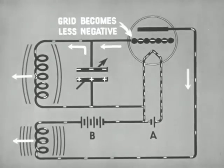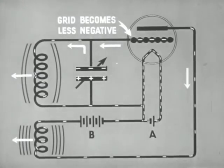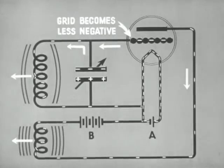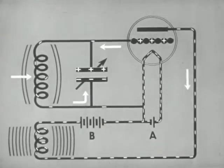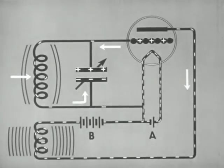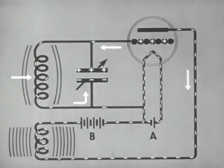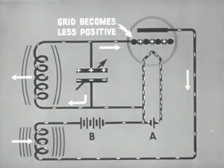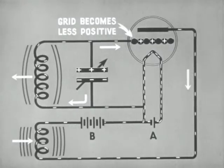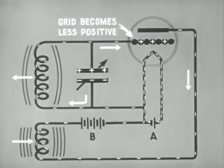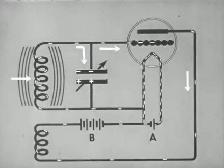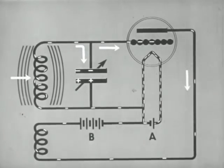As the plate coil field builds up, electrons flow away from the grid. Thus, the grid becomes less negative and more plate current flows. When the plate current reaches maximum, there is no change in the field; hence, no current is induced in the grid coil. The field of the grid coil collapses and helps to charge the condenser. Now the condenser discharges and the radio frequency current in the grid circuit changes direction. The grid becomes less positive and this reduces the plate current. The collapsing field of the plate coil assists in building up the current in the grid circuit. As the grid reaches a high negative charge, the plate current is virtually cut off. The field of the grid coil collapses and charges the upper plate of the condenser. This completes the entire cycle.